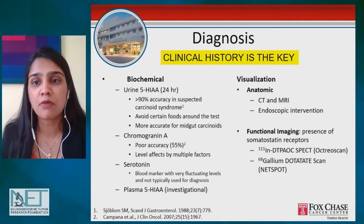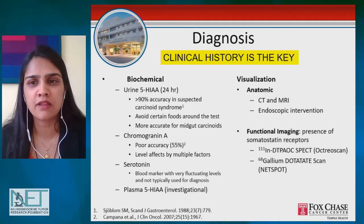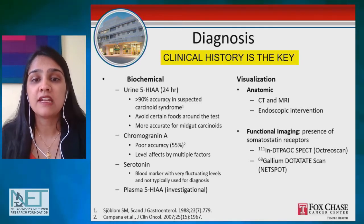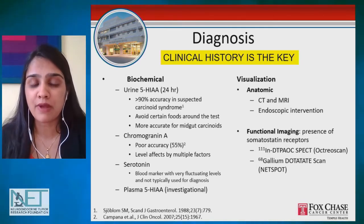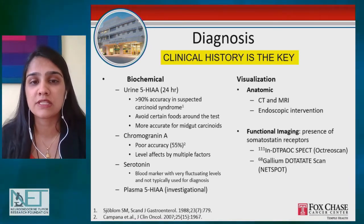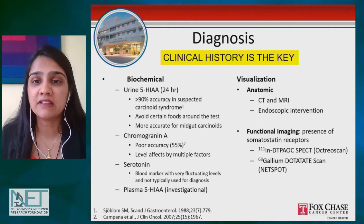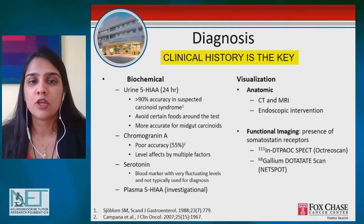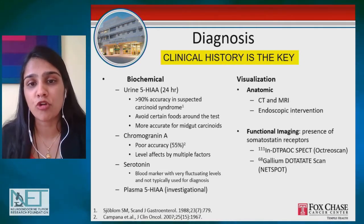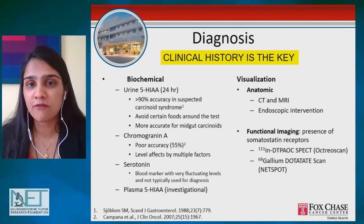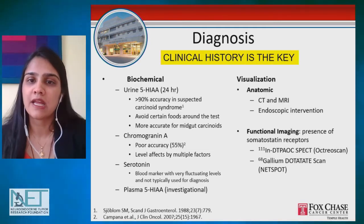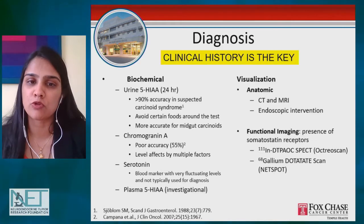The most common testing we do involves blood and urine markers. We test something in the urine called the 24-hour 5-HIAA, which is a breakdown product of serotonin. It is very accurate — in somebody suspected of having carcinoid diarrhea or carcinoid syndrome, urine 5-HIAA is elevated in over 90% of patients. You have to avoid certain drugs and medications for about 72 hours before the test, and it's much more sensitive for mid-gut carcinoid tumors because that's the type that produces serotonin.